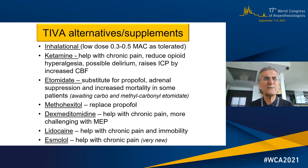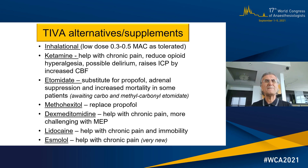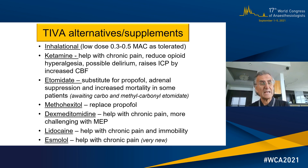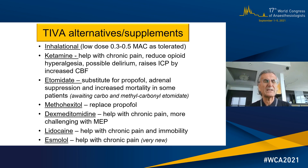What can we do as alternatives or supplements to TIVA? We can add inhalation agents — 0.3 to 0.5 MAC can provide immobility, supplement amnesia and unconsciousness, and decrease the amount of propofol needed. Ketamine can be used especially when signals are small and weak; the same applies to etomidate. Methohexital can also be used, and dexmedetomidine can be used in patients with chronic pain. Lidocaine can be used to reduce the amount of narcotic or propofol required, with minimal effect on the signals.